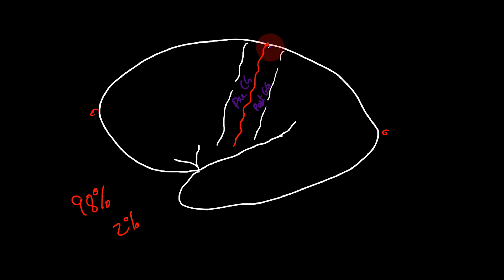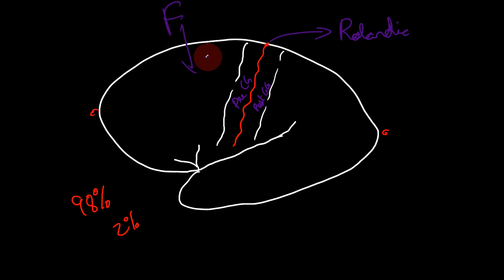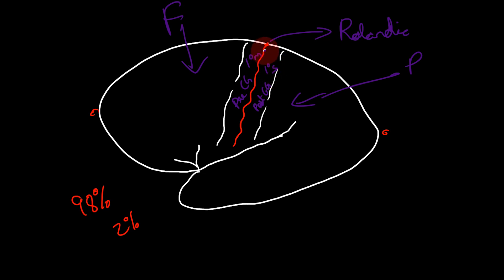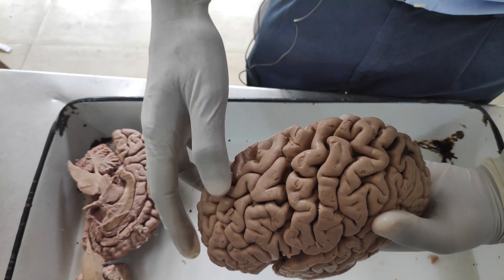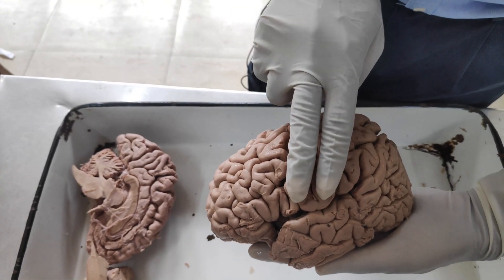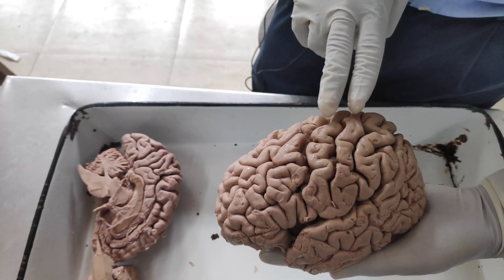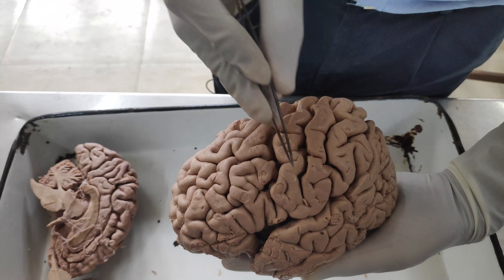The central sulcus, or rolandic fissure, separates the frontal lobe in front from the parietal lobe behind. This is very important because just in front of it is the location of the primary motor area, and just behind it is the primary sensory area. This makes the central sulcus one of the most important fissures in the brain, as the primary somatosensory and somatomotor cortices are located just behind and in front of it. You can identify it by two parallel gyri running obliquely downwards, with the central sulcus between them.